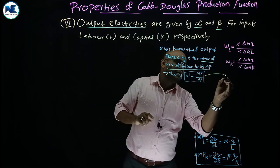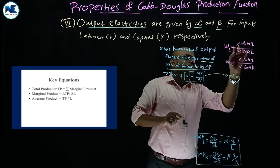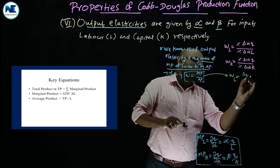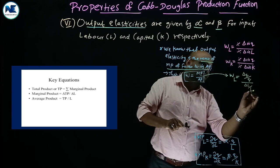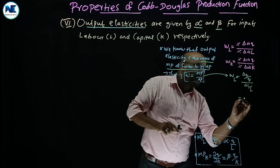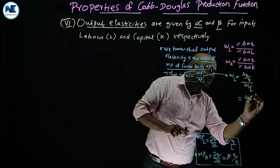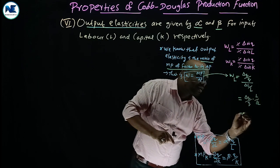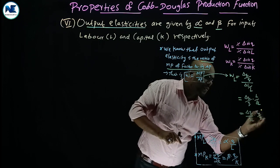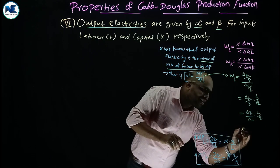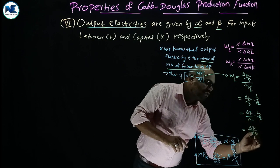Output elasticity with respect to labor is equal to percentage change in quantity, that is delta Q by Q, divided by percentage change in labor, that is delta L by L. Rearranging, this becomes delta Q by delta L, multiplied by L by Q.